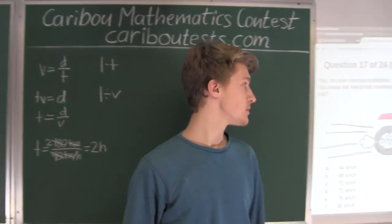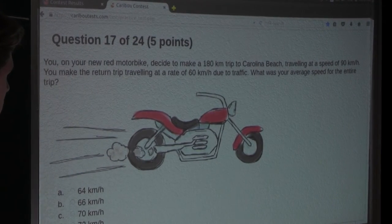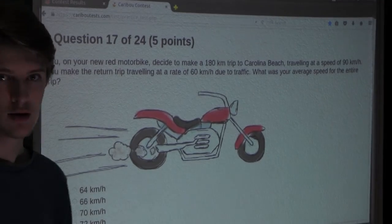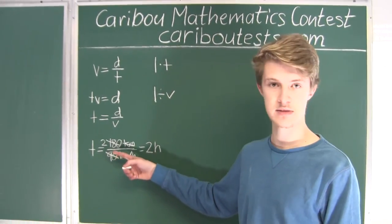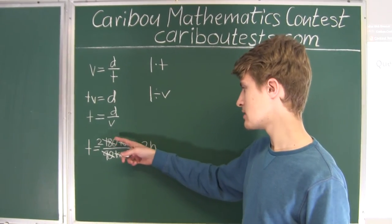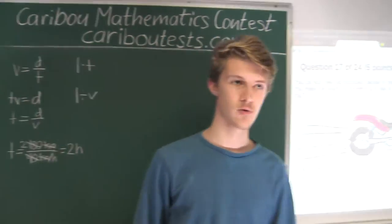The next part says you make the return trip traveling at a rate of 60 km per hour. So now we would do the exact same thing. Instead of 90, we would have 60. So we would have 180 divided by 60, which is 3. So we would have 3 hours for the return trip.